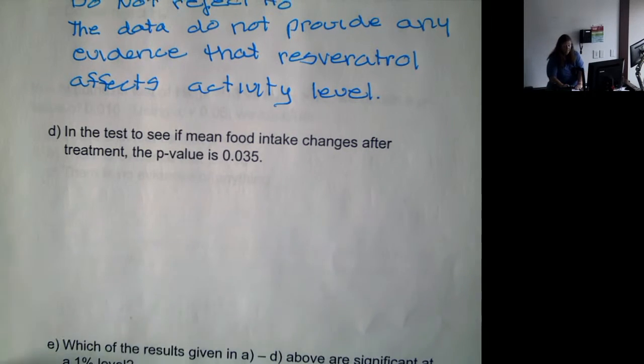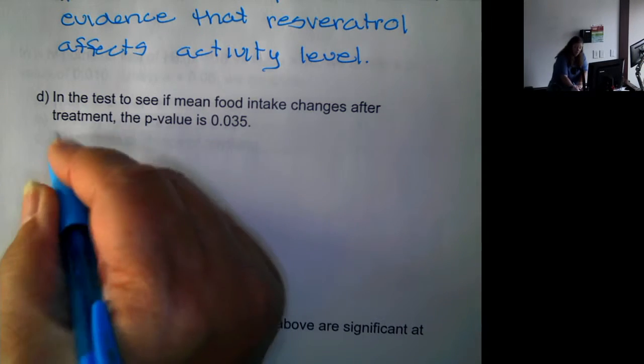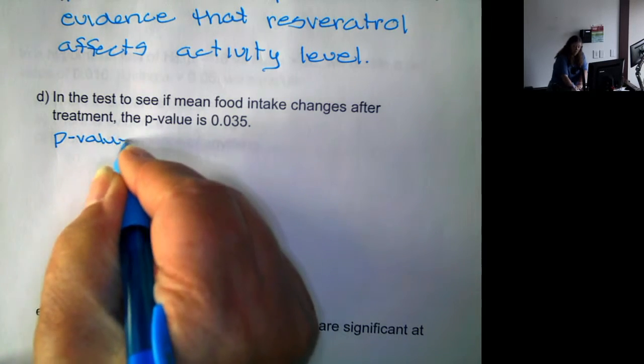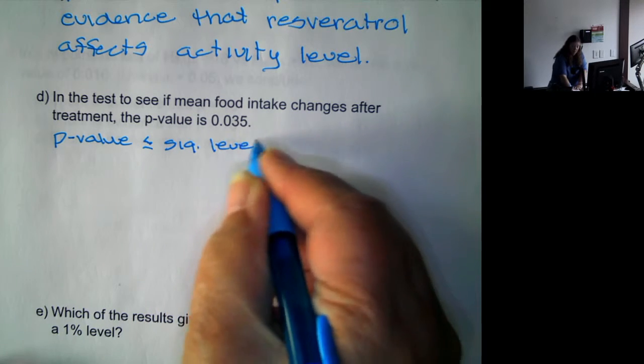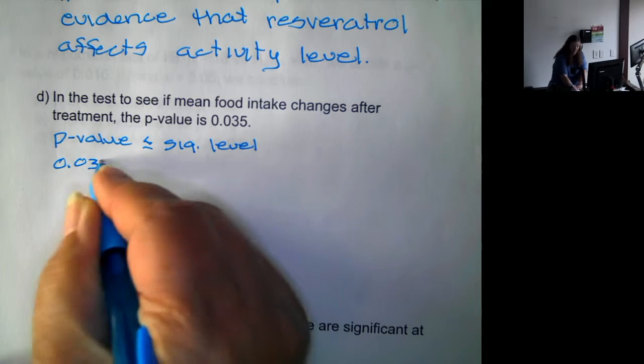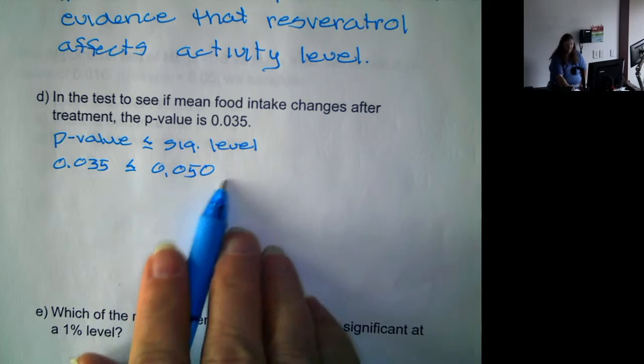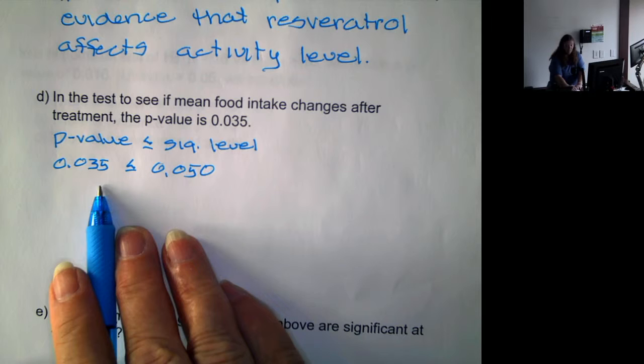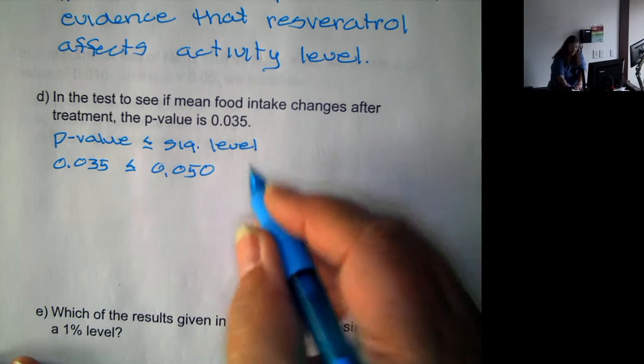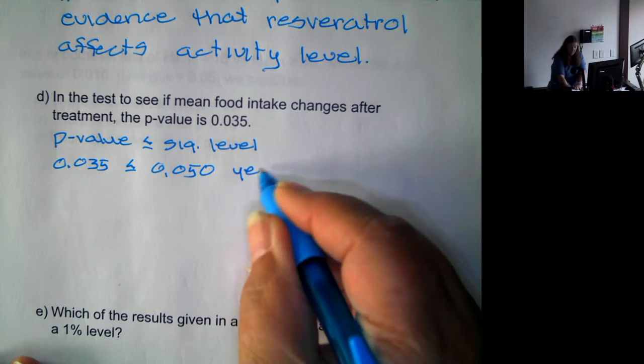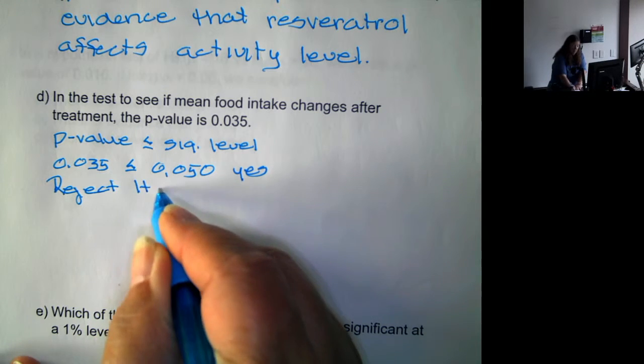So now in part D, same thing, we're seeing if mean food intake changes. So we check p-value less than or equal to significance level. So it's 0.035 less than or equal to 0.050. And you might want to have the significance level out to the same number of decimal places as the p-value because it might make it easier to compare. And yes it is. So we reject the null hypothesis.